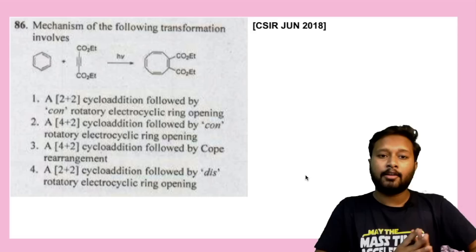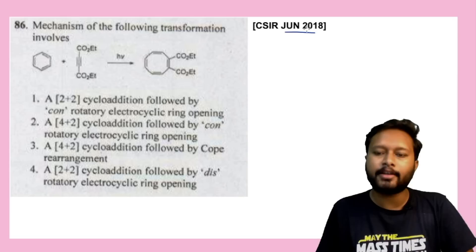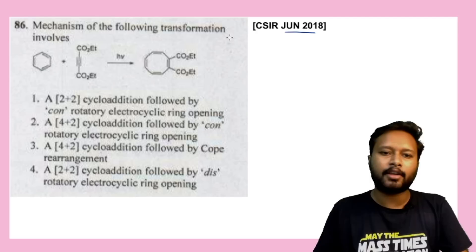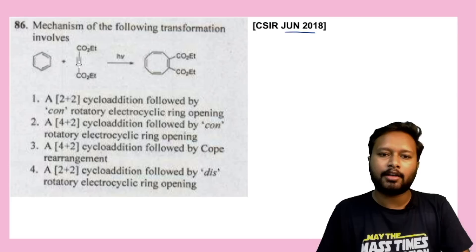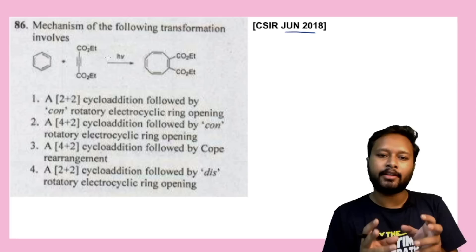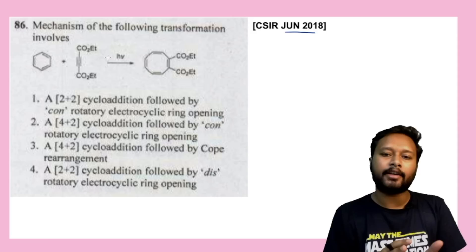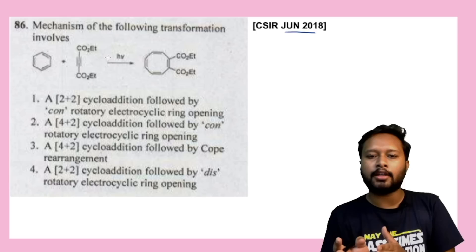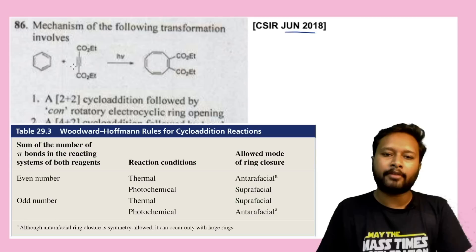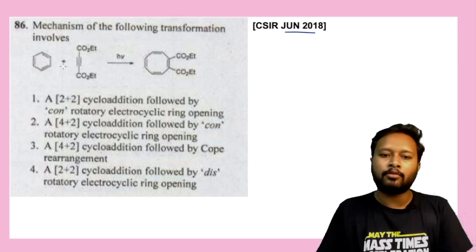The next question from CSIR June 2018 asks about the mechanism of a transformation under photochemical conditions. Remember that 4+2 cycloaddition is suprafacial if the reaction is thermally allowed, otherwise it will be antarafacial. For 2+2 addition under photochemical conditions, the reaction undergoes suprafacial addition. So for this molecule under photochemical condition, we prefer 2+2 cycloaddition rather than 4+2 cycloaddition.